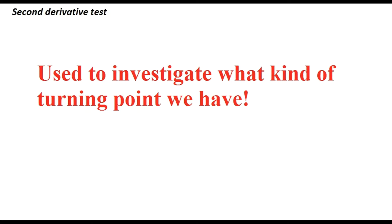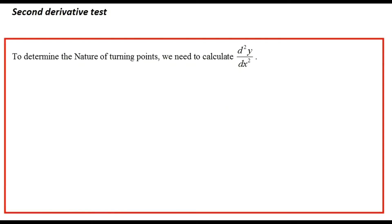Now let me talk about the second derivative test. We use the second derivative test in order to find the nature — that means investigating what kind of turning point we have. To determine the nature of the turning points, we calculate d²y/dx², which is the second derivative.